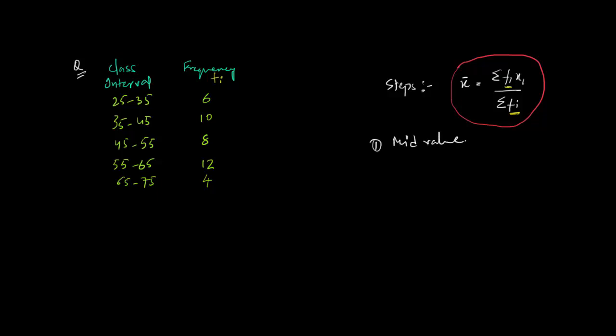Now, in the previous video, I have told you how to find out the mid value. The mid value is nothing but the middle value of the class interval. How do we find the mid value? We simply take the upper limit and add it with the lower limit and then divide it by 2, which gives us 60 by 2 and that is 30. So, 30 is the mid value of this class.